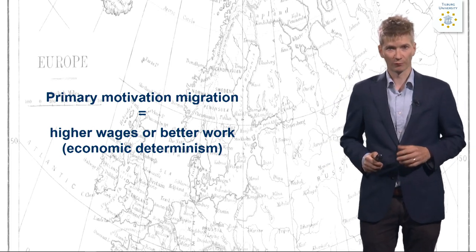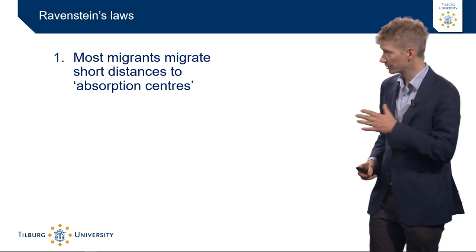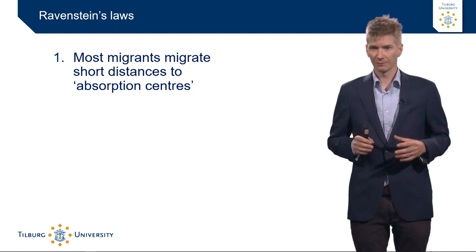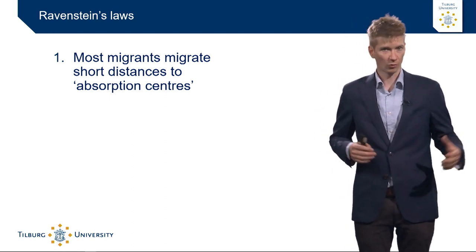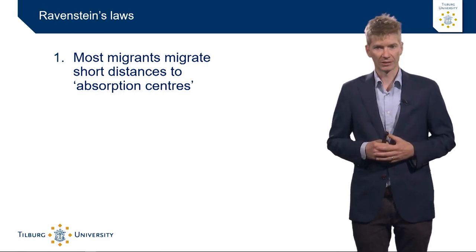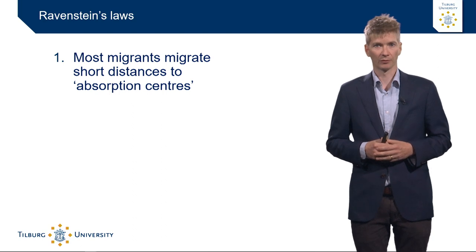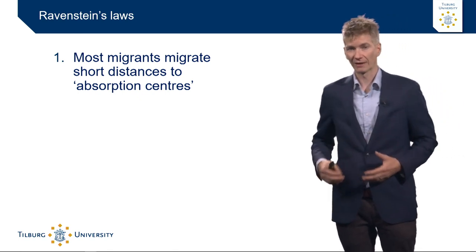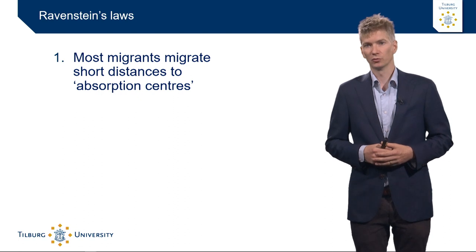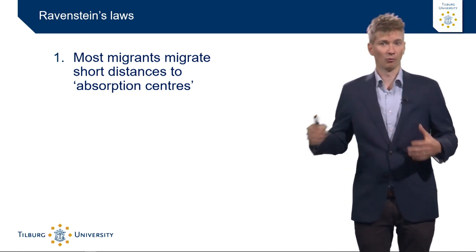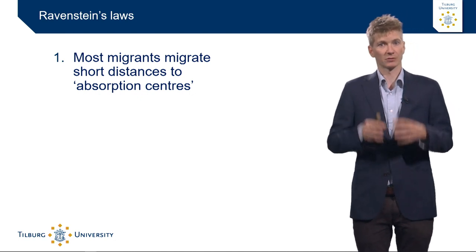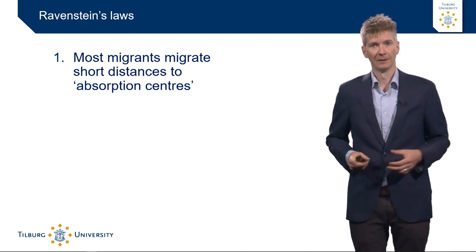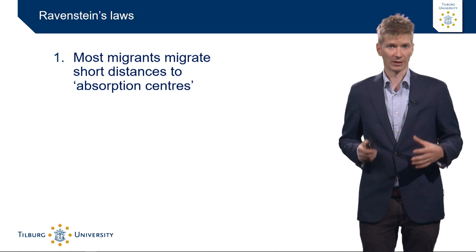The first law of Ravenstein is that most migrants migrate short distances to absorption centers. Generally, people do not tend to move very far from their home. For example, from Tilburg the likelihood of moving to Amsterdam or Antwerp is much higher compared to moving to New York, Osaka, or somewhere in South Africa. Absorption centers are places where migrants generally are already residing.